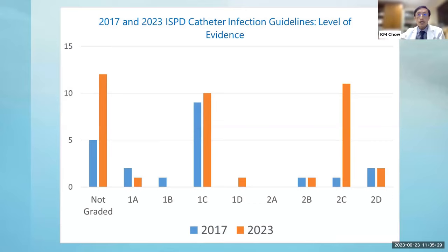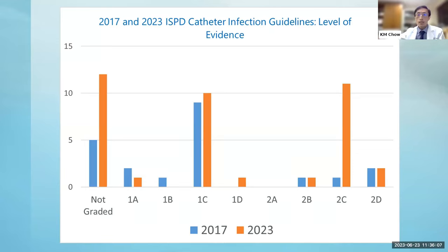Looking at the blue color representing the 2017 version, many recommendations are in the C category. In the 2023 version, we have more recommendations that are not graded, and we have a lot of 2C recommendations — not many in A, not even one in 2A, just a few in 1A. This gives you a rough idea of how certain the authors are about the recommendations and suggestions, so you are totally right to take our words with a pinch of salt.